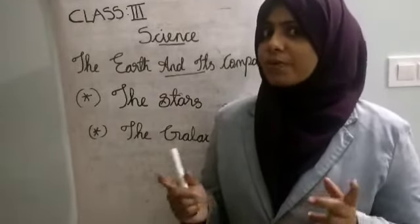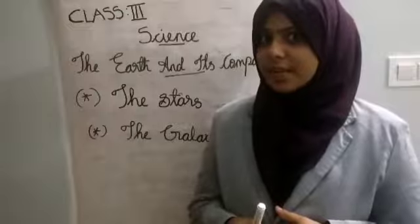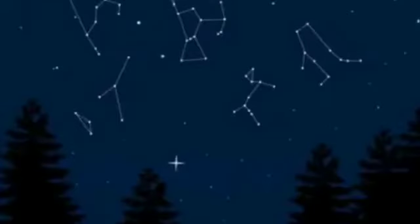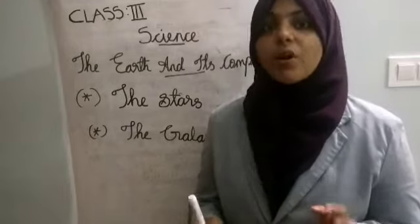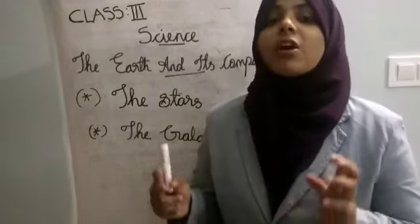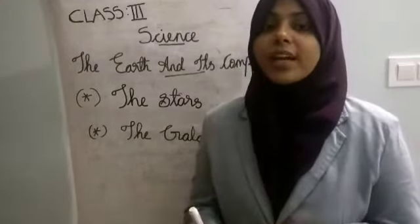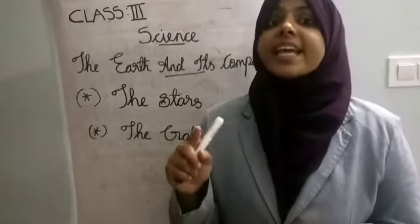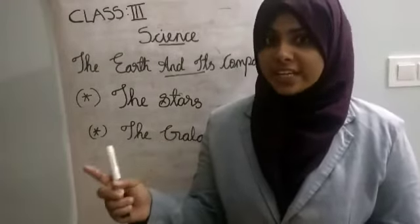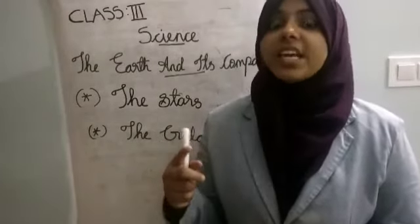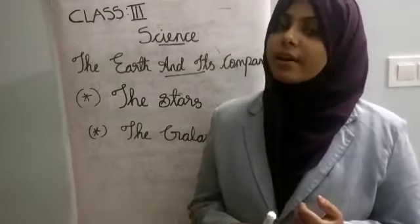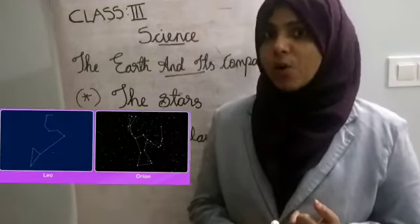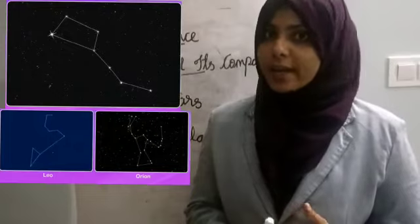Children, have you seen the group of stars in the sky? Some stars are arranged in groups and form patterns in the sky. These are called constellations. There are 88 constellations in the sky. Some of them are Ursa Major, Leo, Scorpius, Orion, etc.